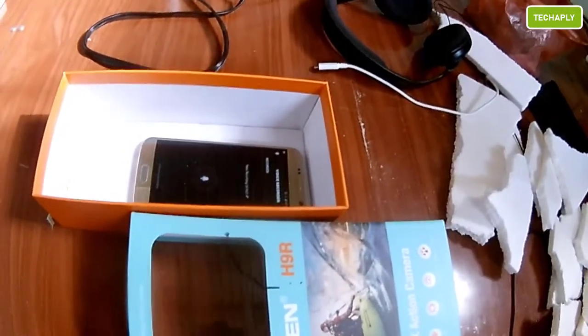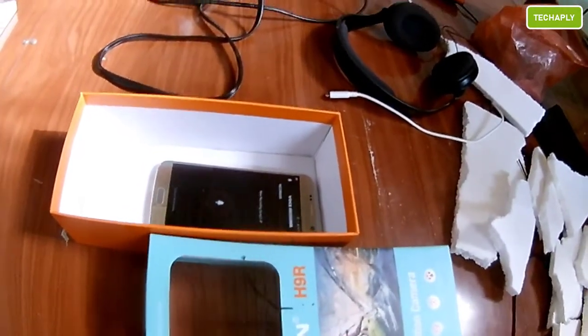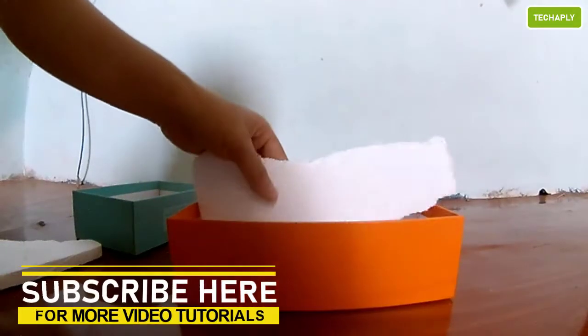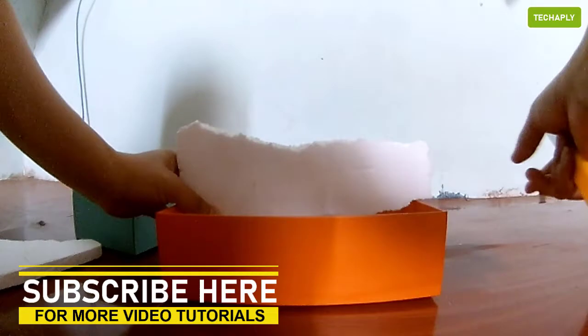Now let's turn this box into a small studio recording room for the Android phone. First step, cut all the foam in the shape of the box and attach them in.